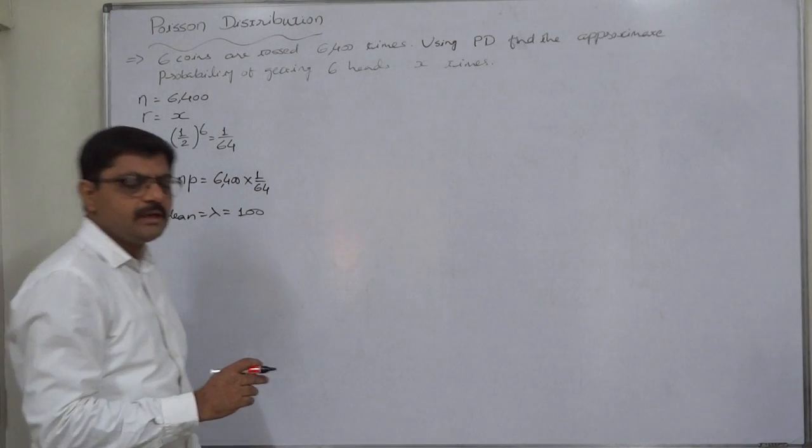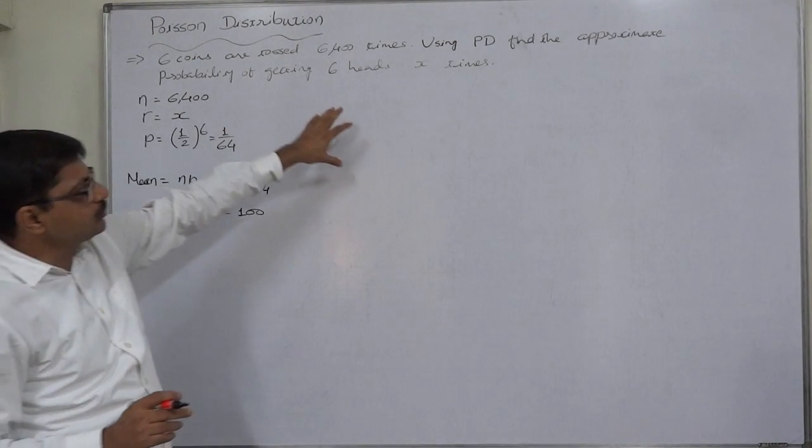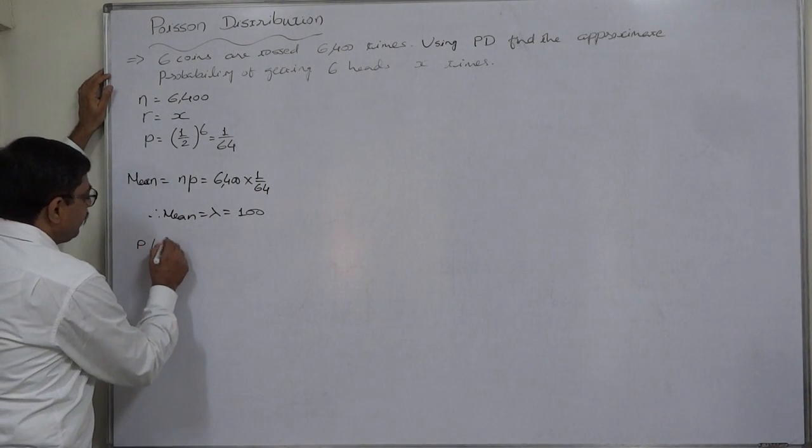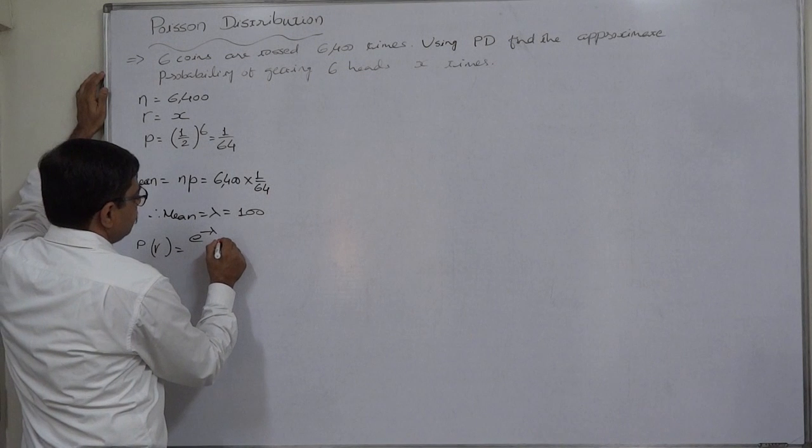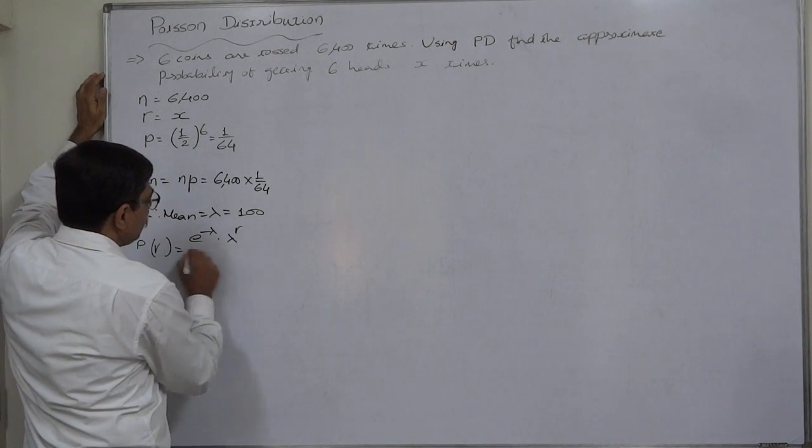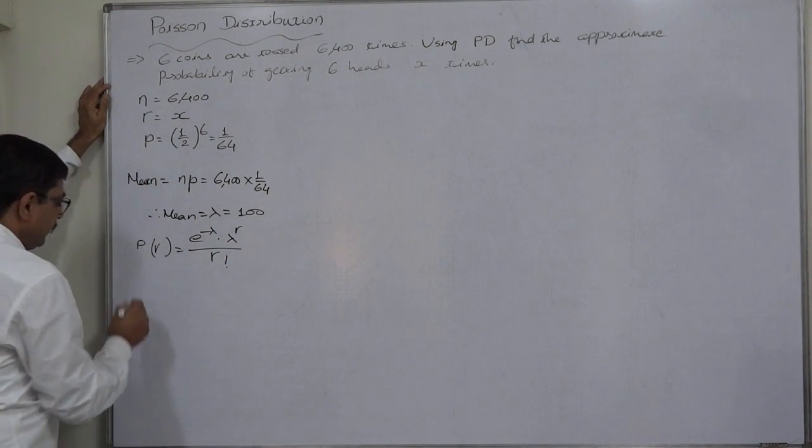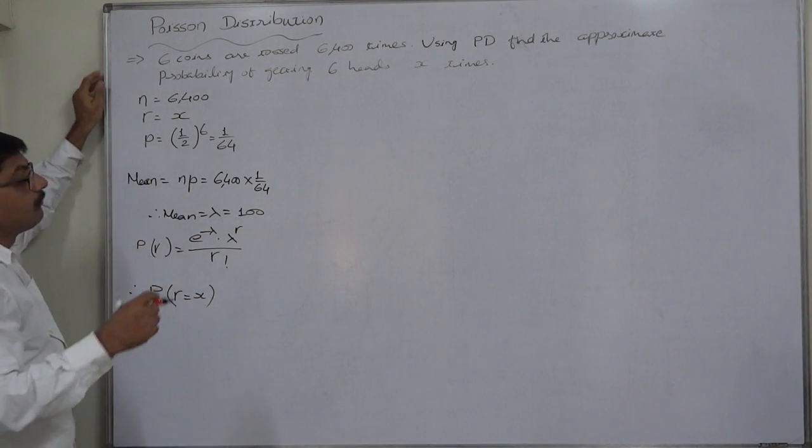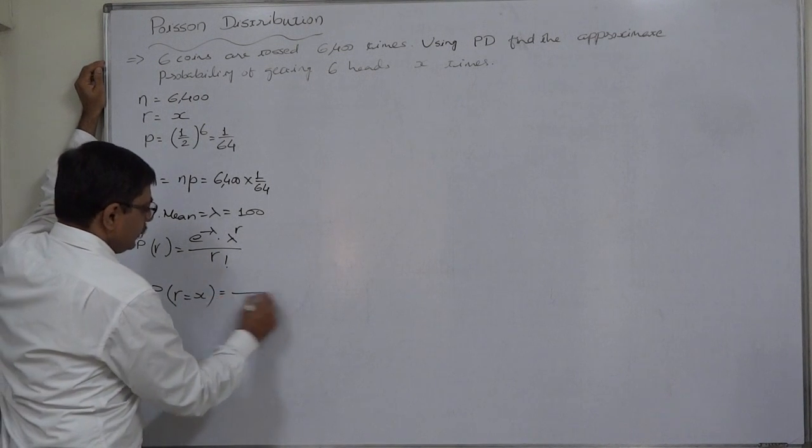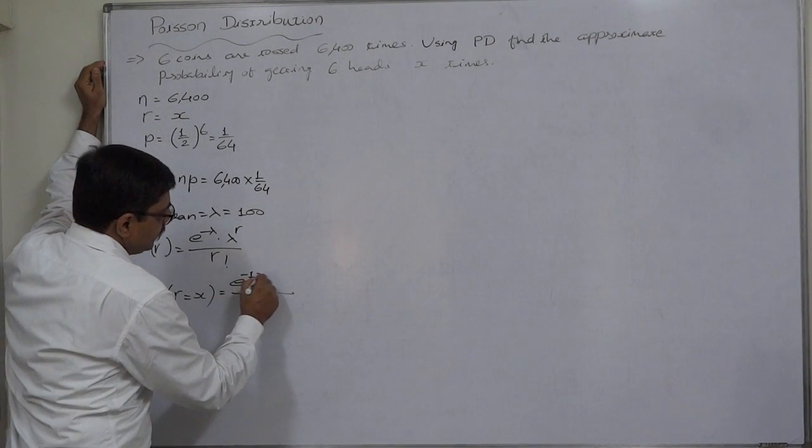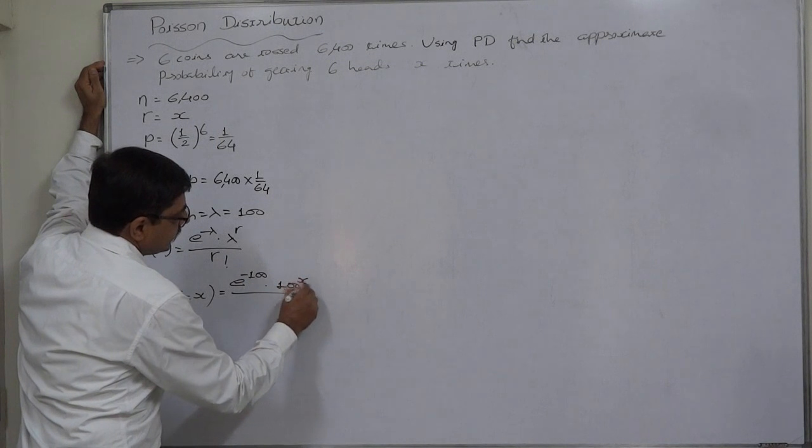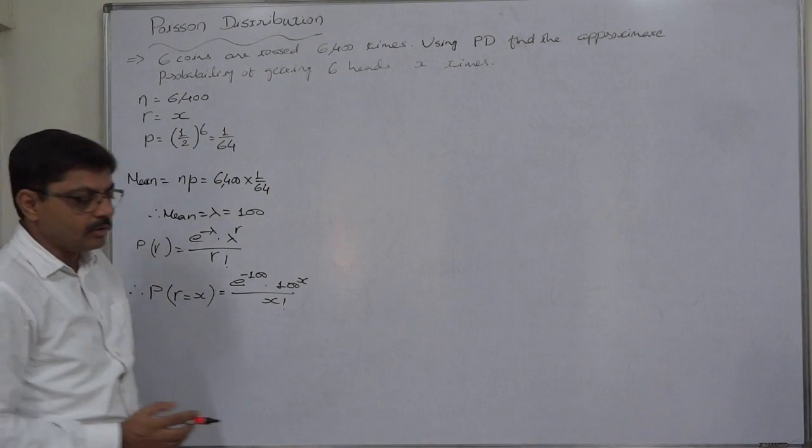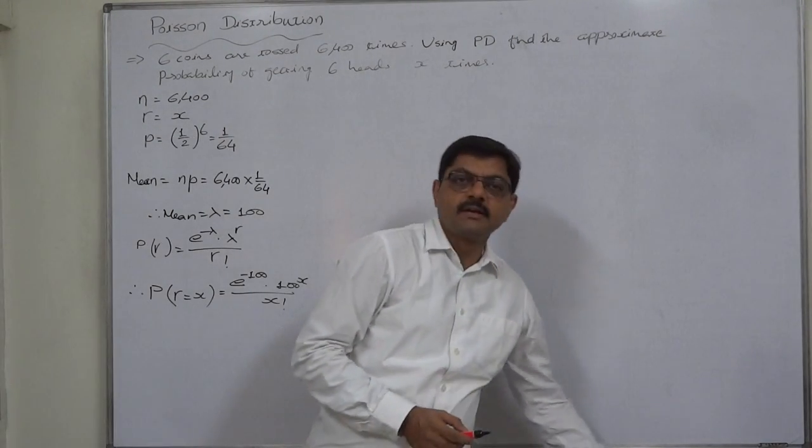This is actually binomial approximation to Poisson distribution. Now probability of r number of success is e raise to minus mean into mean raise to r upon r factorial. We need to calculate probability of r equals to x. So it is e raise to minus 100 into 100 raise to x upon x factorial. This itself is final answer because we don't know the exact value of x.